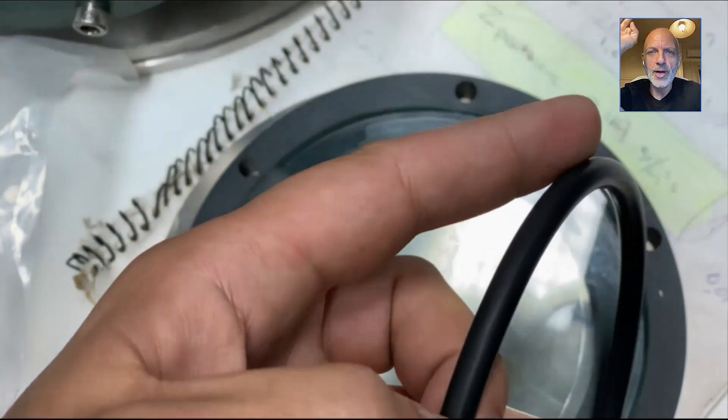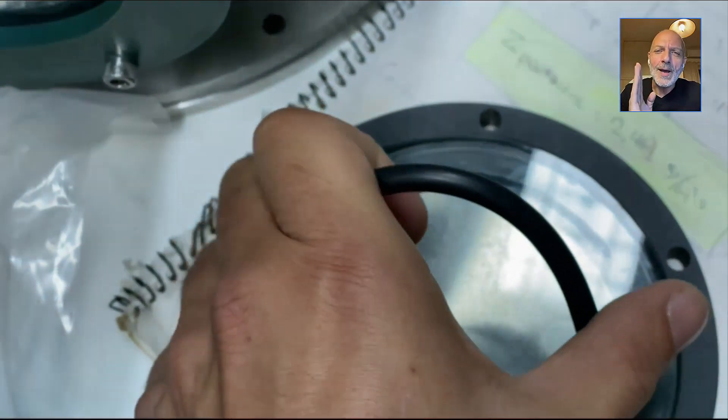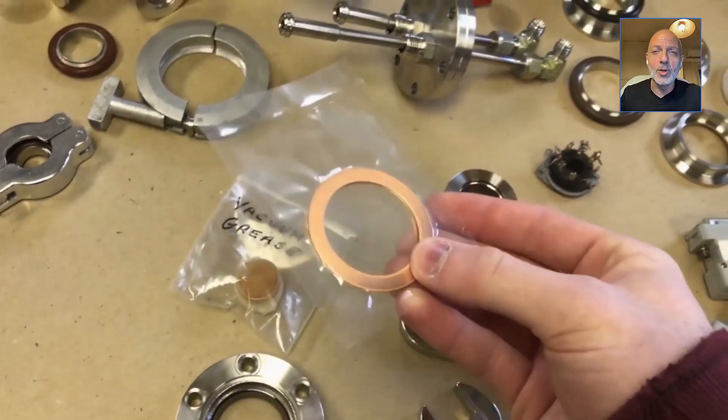Those plastic rings, the O-rings can actually get you down to 10 to the minus 6. It's very hard. After 10 to the minus 6, you do need those metal gaskets.